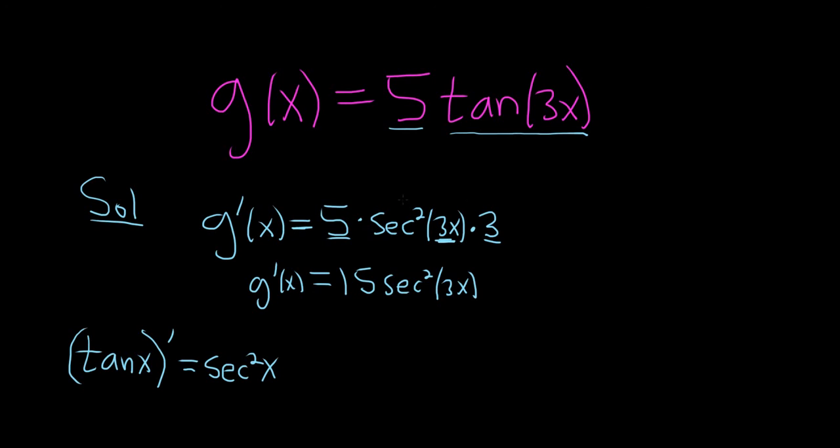So again, it's the derivative of the outside, which is secant squared, times the derivative of the inside, which is 3. And 3 times 5 is 15. And that's it. I hope this video has been helpful.